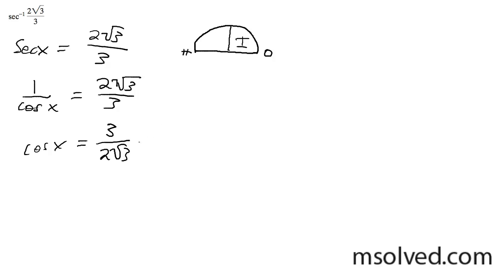And to get this to look something more familiar, I'm going to multiply this by 1 over root 3 on both the numerator and denominator, and I'm going to end up with root 3 over 2.